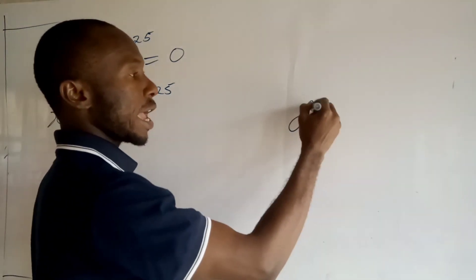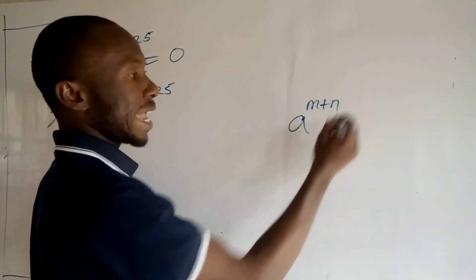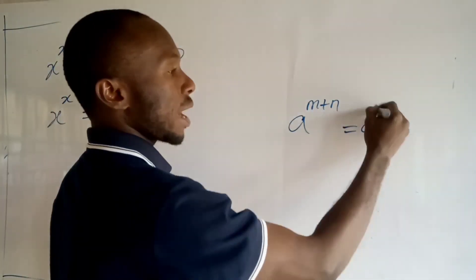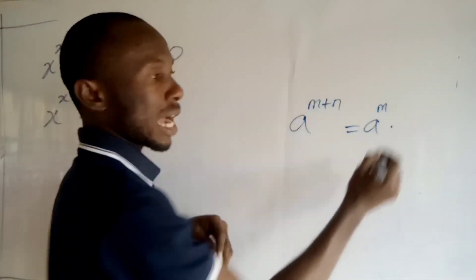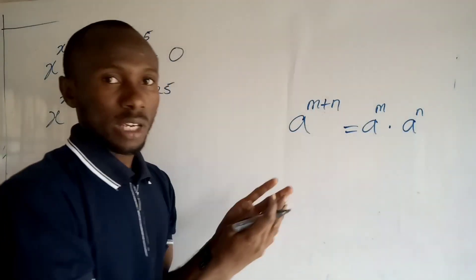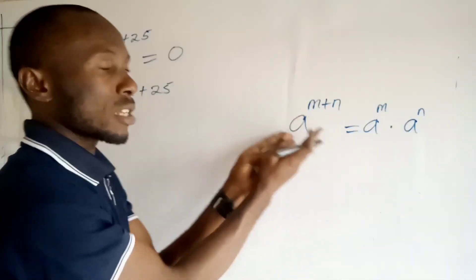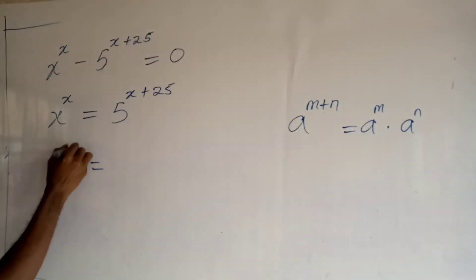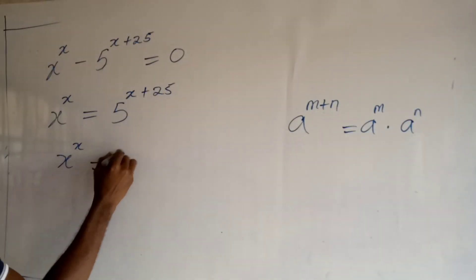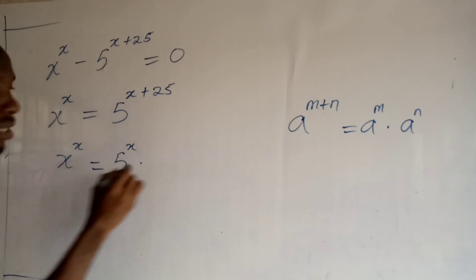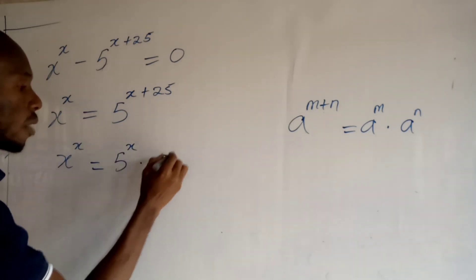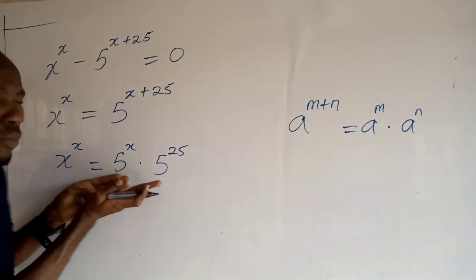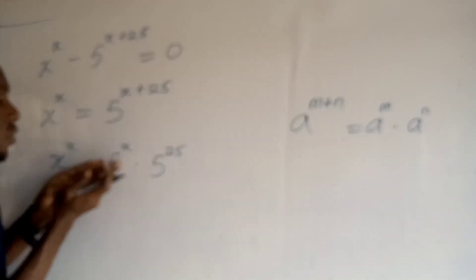Now remember the exponential law that says if I have a to the power m plus n, I can split it to become a to the power m times a to the power n. That's exactly what I'm going to apply right here. So I'll have x to the power x is equal to 5 to the power x times 5 to the power 25.